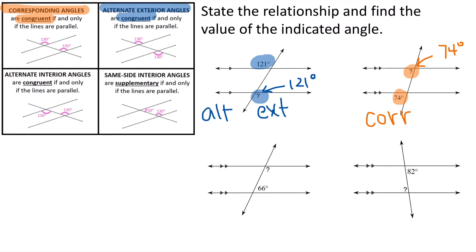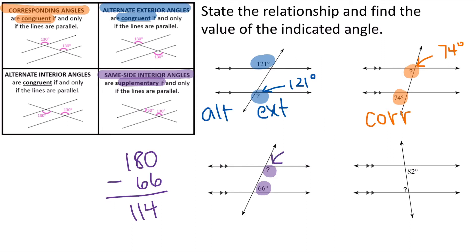For our third picture, we have a 66 and a question mark. These two angles are same side interior angles, which means they need to be supplementary — they need to add up to 180 degrees. So to figure out what the question mark is, I'm going to take 180 minus 66, and it makes 114. So our question mark is going to be 114 degrees. I should label that these are same side interior angles, or SSINT for short.